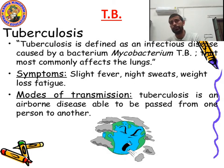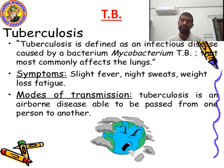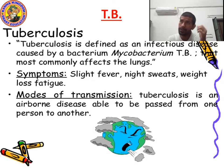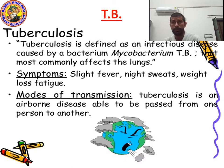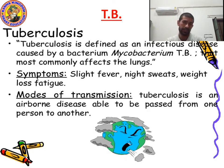So, what is TB? Tuberculosis is an infectious disease caused by the bacterium Mycobacterium tuberculosis that most commonly affects the lungs. Its symptoms include fever, night sweat, weight loss, and fatigue. The mode of transmission: tuberculosis is an airborne disease able to pass from one person to another.